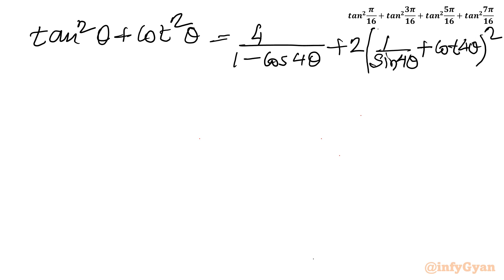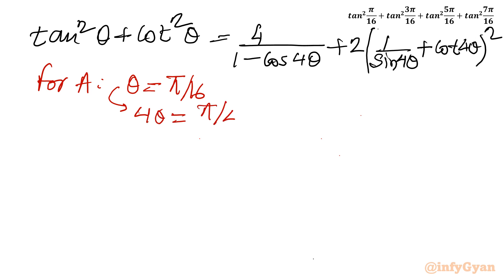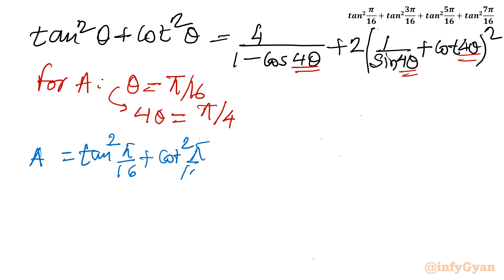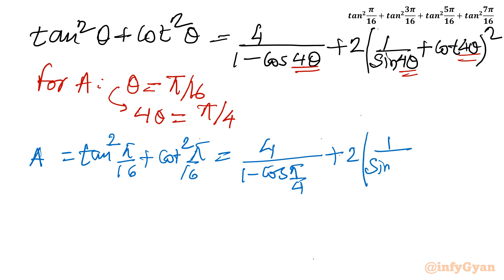Now let us put θ = π/16 for expression A. So 4θ = π/4. Everywhere we will put π/4. So A = tan²(π/16) + cot²(π/16) = 4/(1 − cos(π/4)) + 2·[1/sin(π/4) + cot(π/4)]².